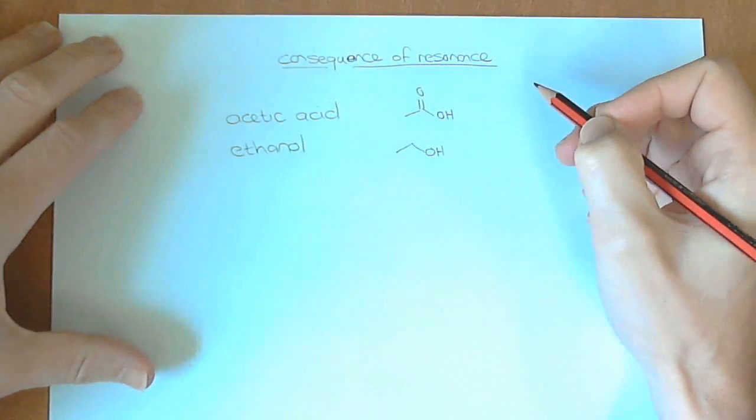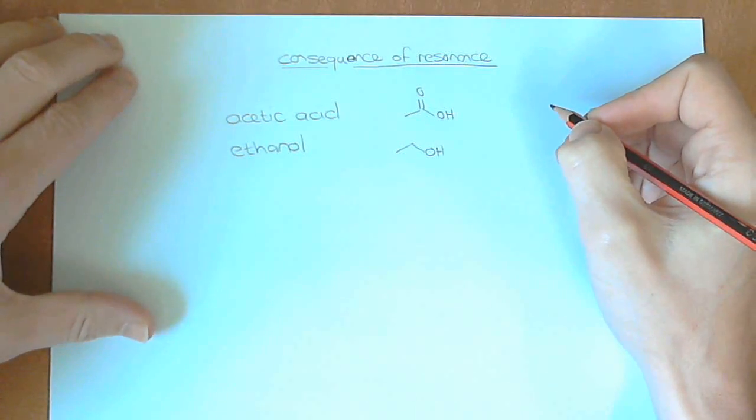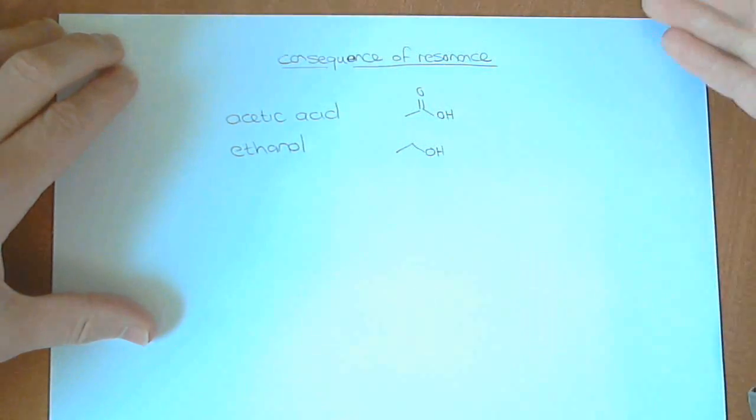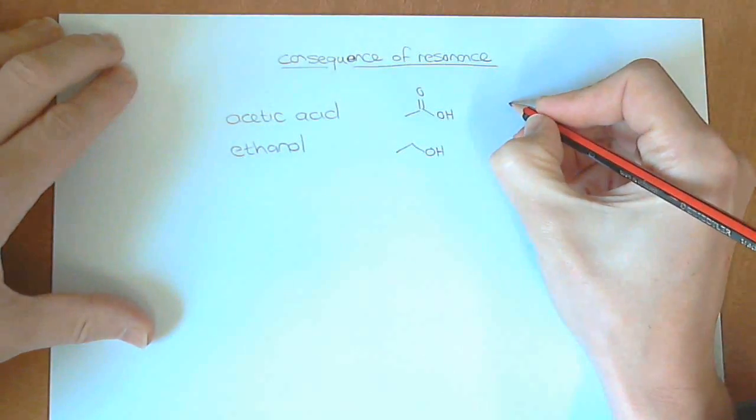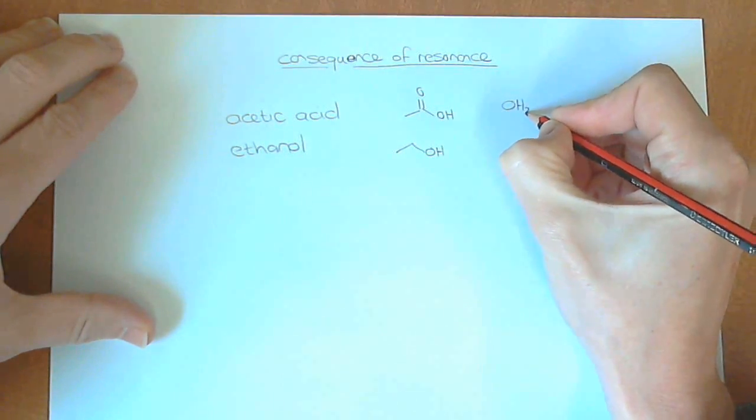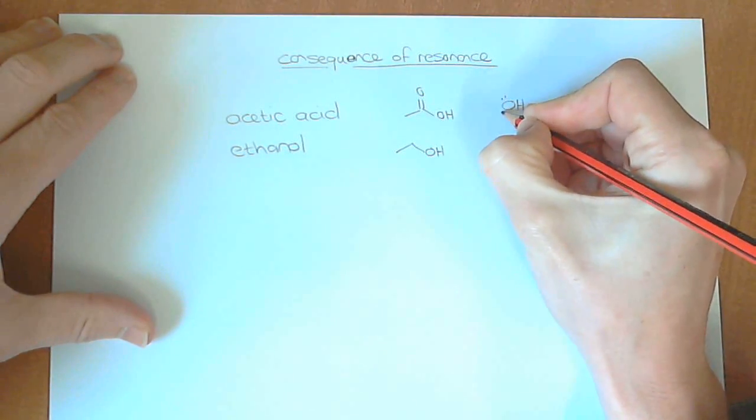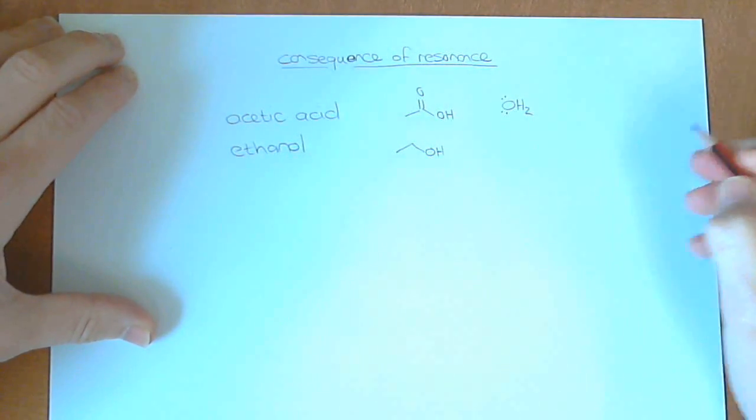So what makes something a good acid? Well, it's a good acid if it can donate its proton to something. We tend to consider the donation of protons to water as our test for acidity.